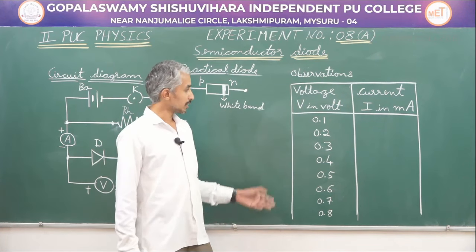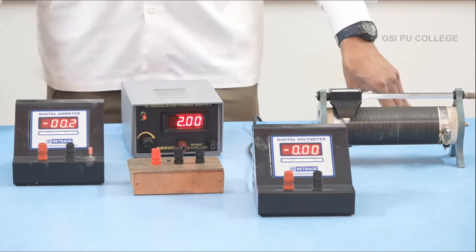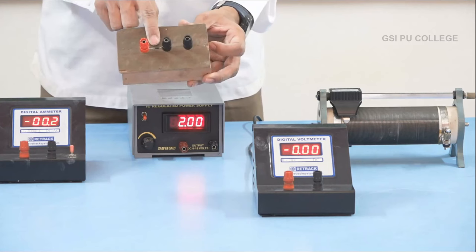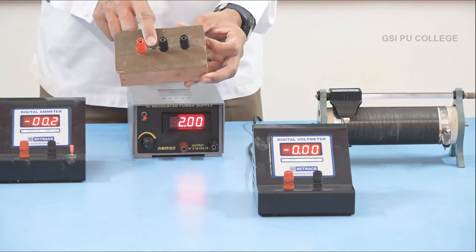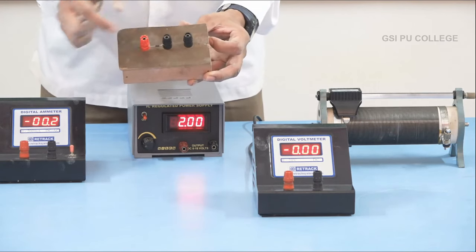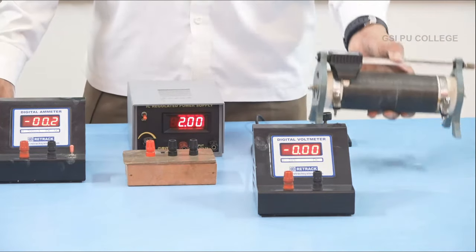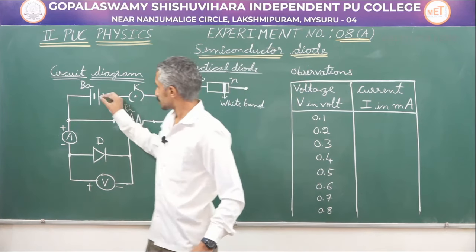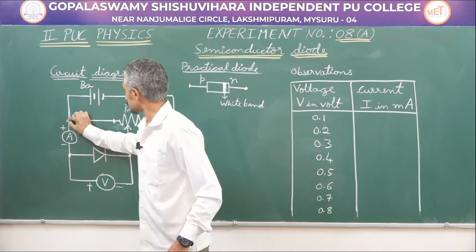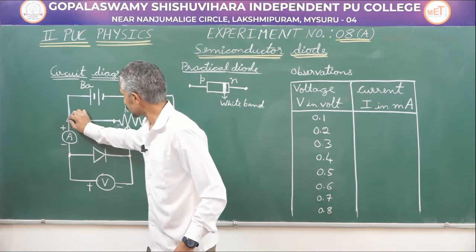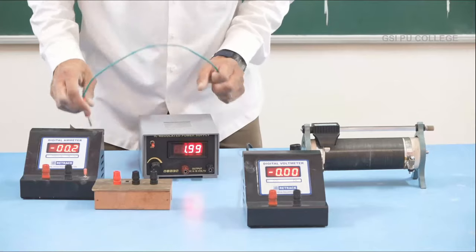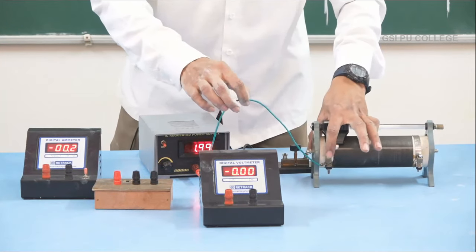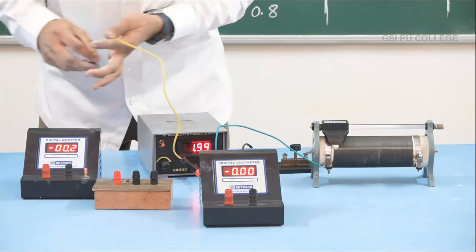Let us make the circuit connections. Here is the experimental setup — I have a battery, an ammeter, a diode (a small bead-like thing mounted onto terminals), a voltmeter, a rheostat, and a plug key. The battery positive goes to one end of the rheostat, and from the same battery positive, we also connect to the positive of the ammeter.